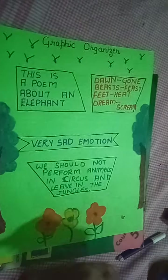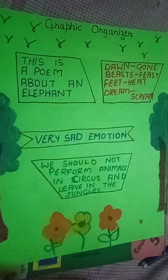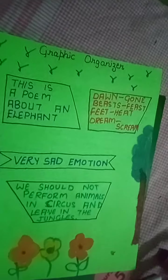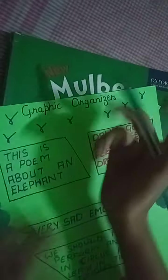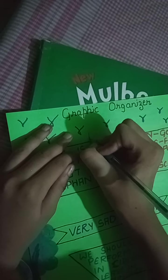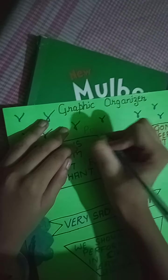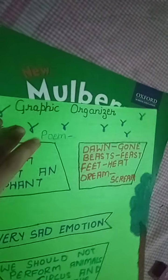Now we will write Circus Elephant with a green pen, and now with a marker.